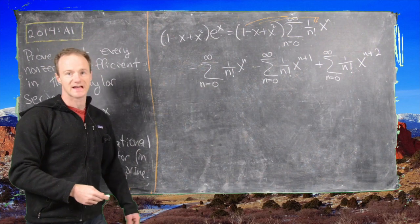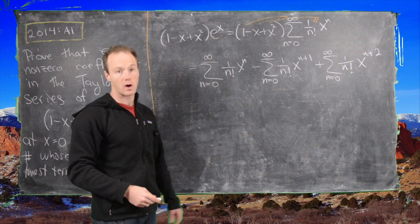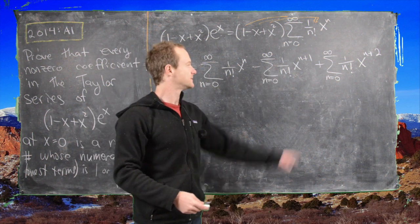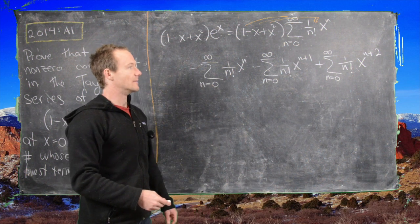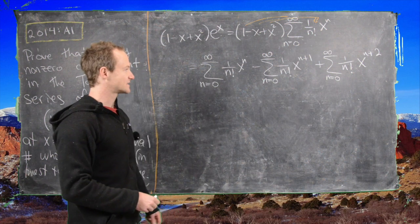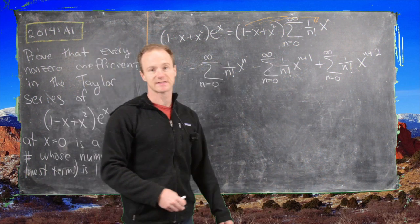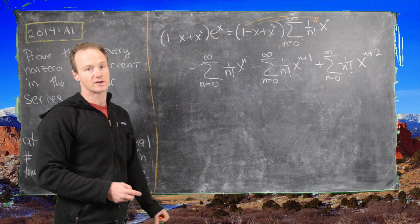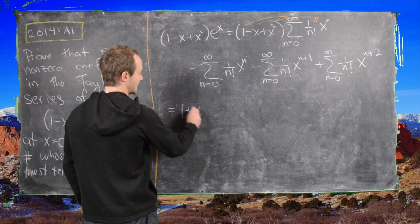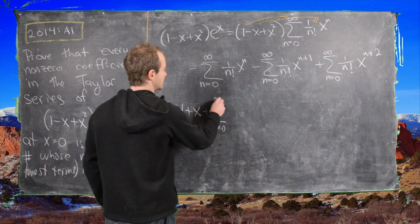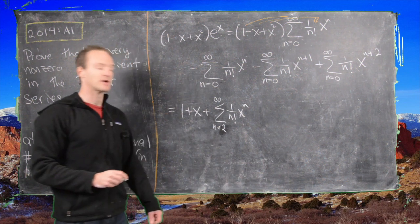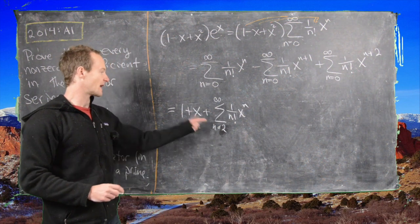Notice this first term starts at constant terms, so plugging in n equals 0 gives just 1. This second term starts at x to the first power, so plugging in n equals 0 gives x. And the third term starts at x squared terms. What we want to do is extract terms from the first sum and the second sum so that they both start at x squared type terms. That means we need to extract two terms from the first sum, giving us 1 plus x plus the sum from n equals 2 to infinity of (1 over n factorial) x to the n.